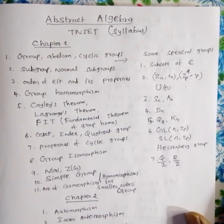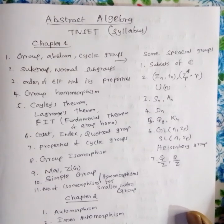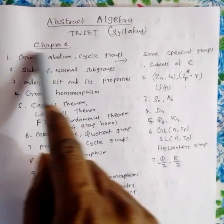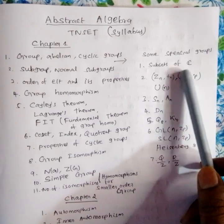The first chapter covers definitions. We will talk about Abelian groups, Cyclic groups, Subgroups, and Normal Subgroups. I will teach you about these specific groups and subsets.